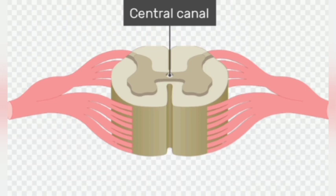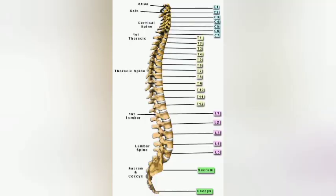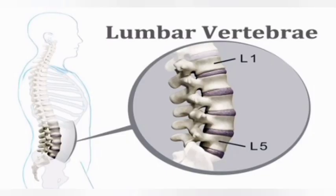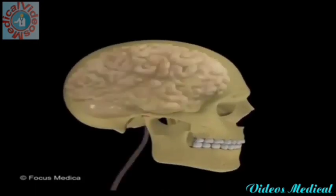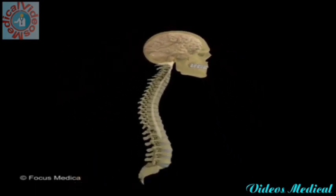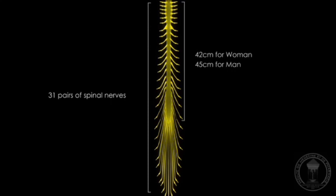Internally, the spinal cord contains a cerebrospinal fluid-filled cavity known as the central canal. The spinal cord extends from the lower end of the medulla oblongata to the first lumbar vertebra. The average length of the spinal cord is 45 cm in male and 42 cm in female.